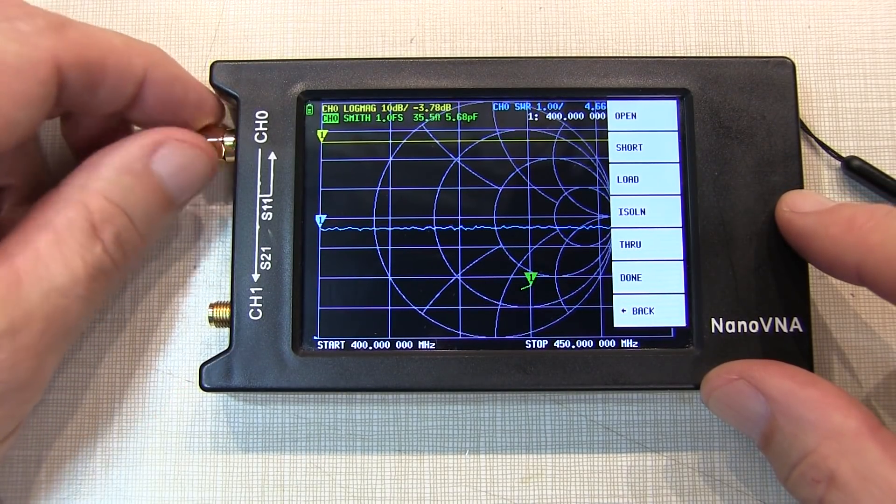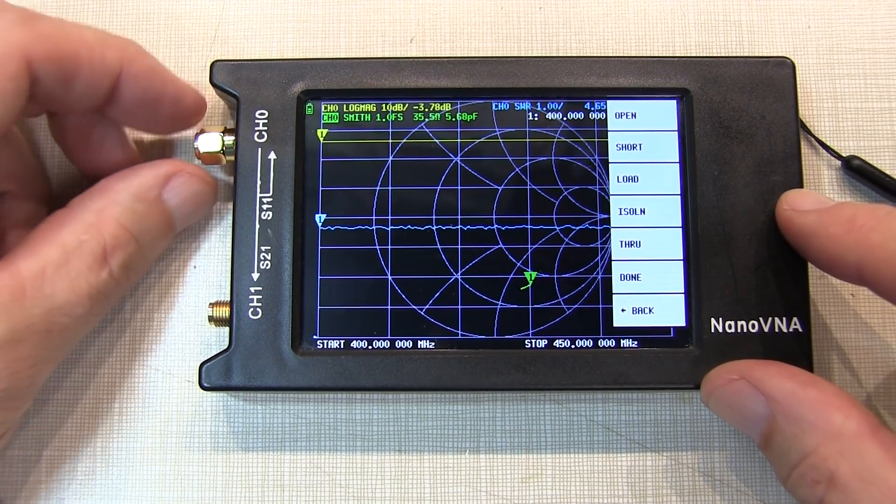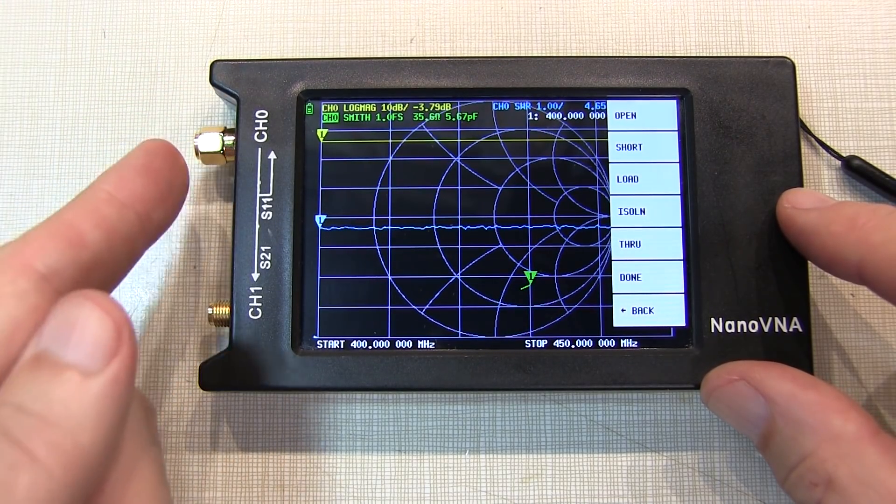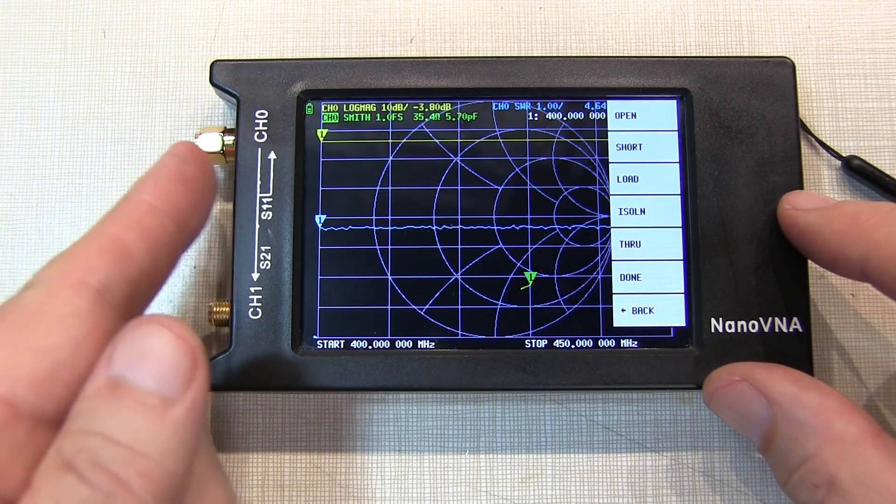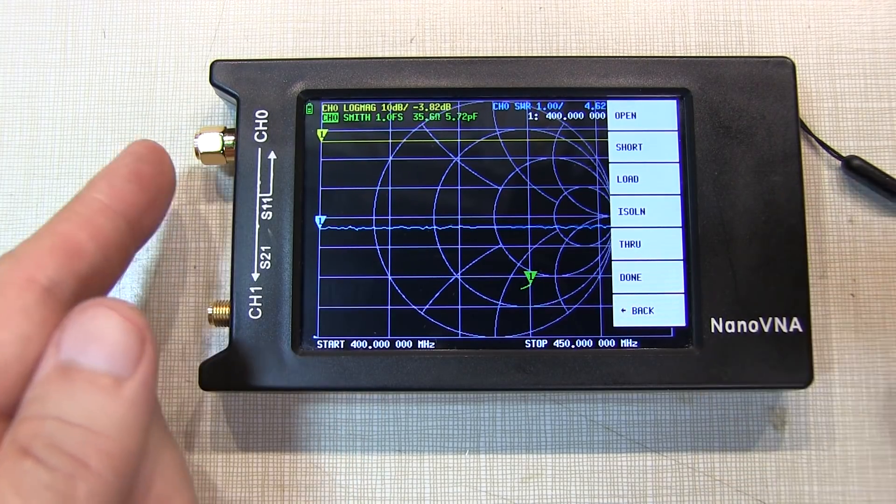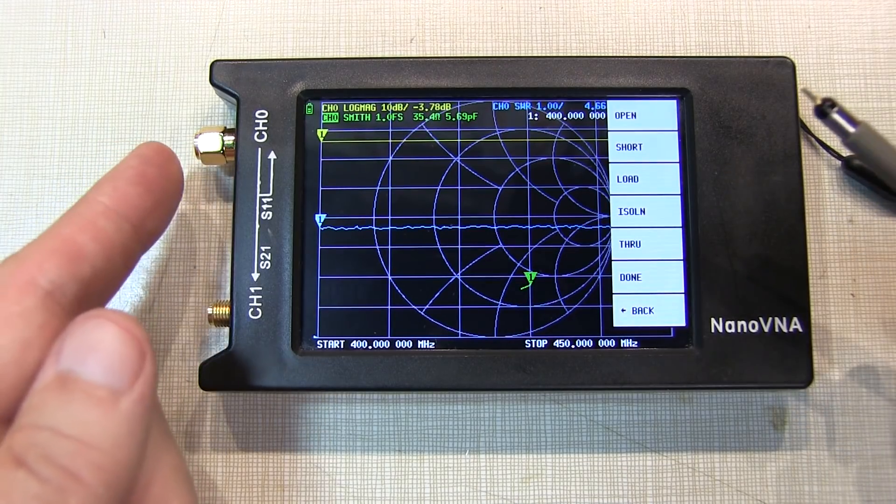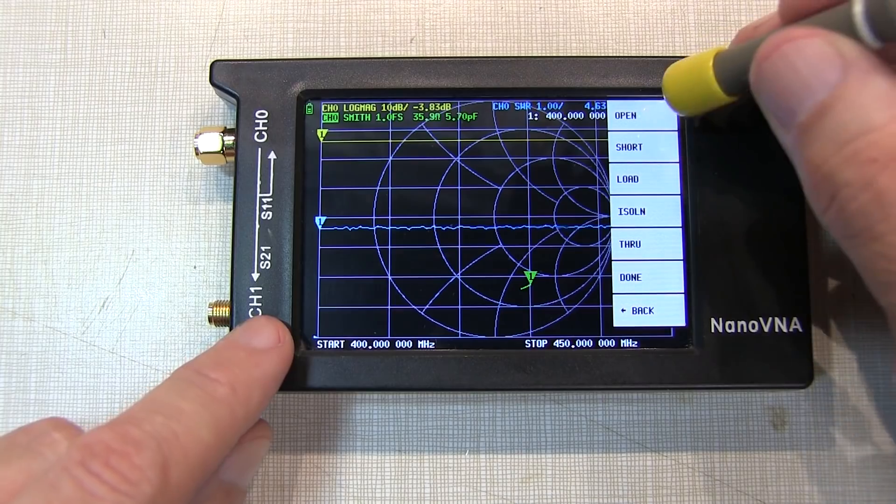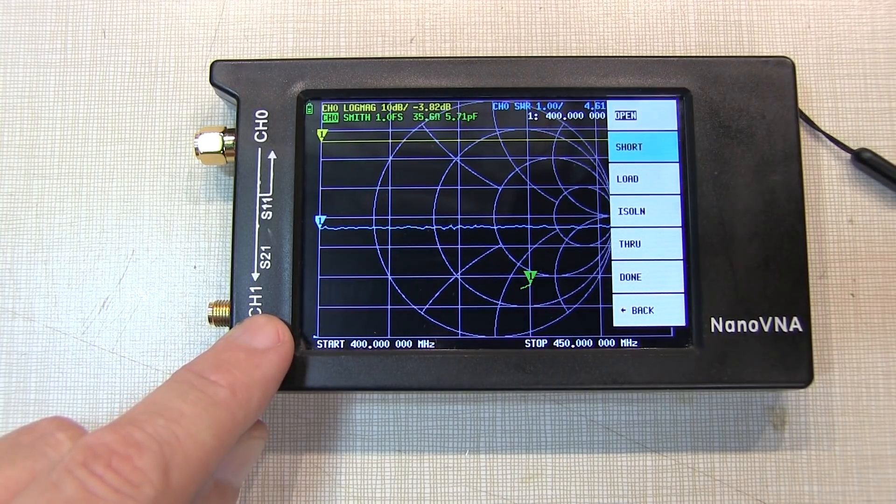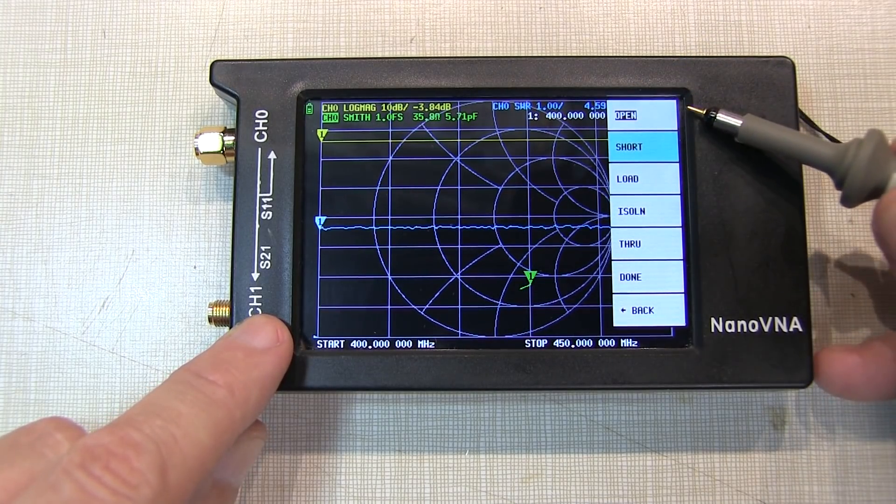We'll start by connecting the open to the port. And you might say, well, why don't you just leave the port open? Well, the reality is that you want each of these to have exactly the same reference plane, or measurement plane. So there is an open, because it kind of extends the length of the shield and things like that. At lower frequencies it doesn't matter, at higher frequencies it does matter, so it's a good practice to get into. So once I've connected the open, I just touch on open, and it makes a measurement on that. You see that's now reverse text, ready to do the short.